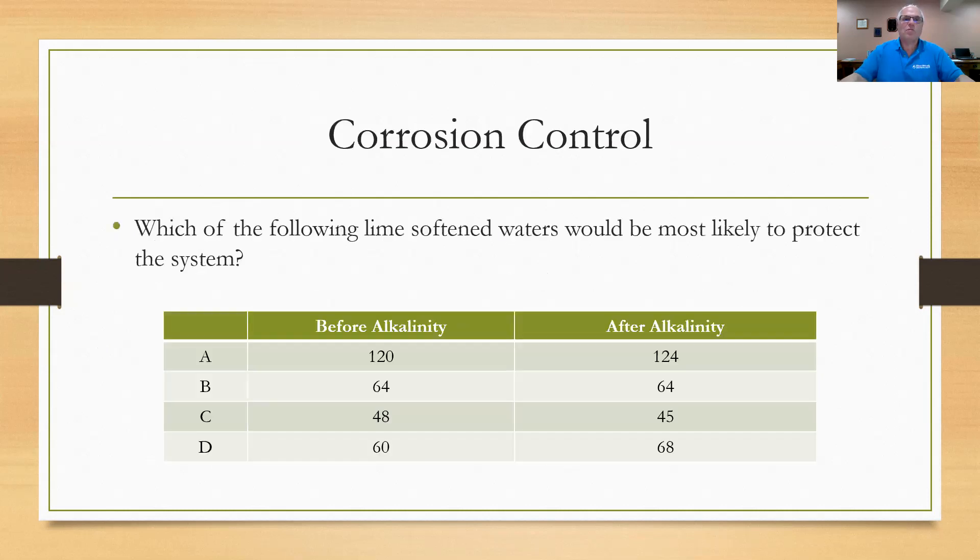Okay, let's try this one: Corrosion control. In the old-fashioned lime soda softening process, of course, they would always try to produce a lime softened water that would protect the distribution system rather than be aggressive water. So they would recarbonate the process just to the point where they would have a lime soda softened water just slightly corroding rather than slightly aggressive. So you wanted to put some alkalinity as calcium carbonate onto the mains to provide a protective coating. That was the idea. So they give you waters A, B, C, and D here and they show you the before alkalinity and after alkalinity results. They show you for A you went from 120 to 124 when it got into the system. Water B went from 64 to 64, no change. Water C went from 48 to 45. Water D went from 60 to 68. Which of those would be most suitable under the old way of doing things? Answer's on the next slide, think about it.